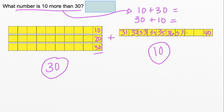36, 37, 38, 39, and 40. So 10 more than 30 equals 40.